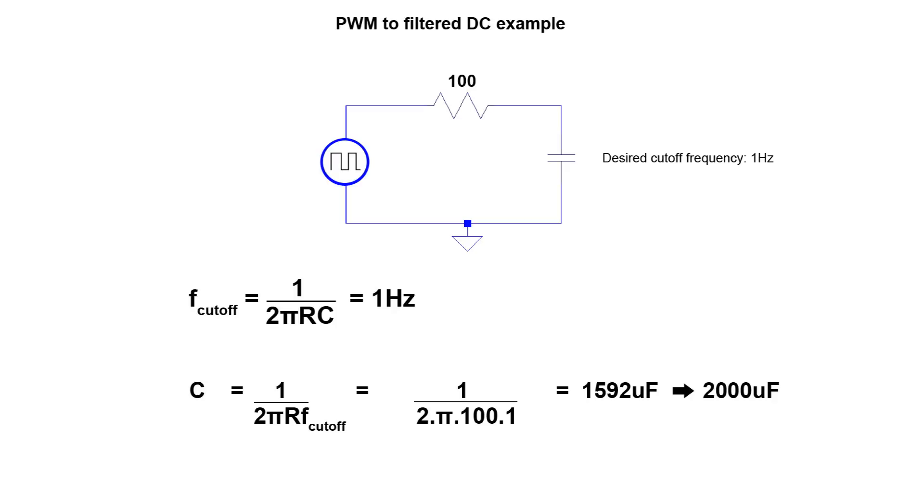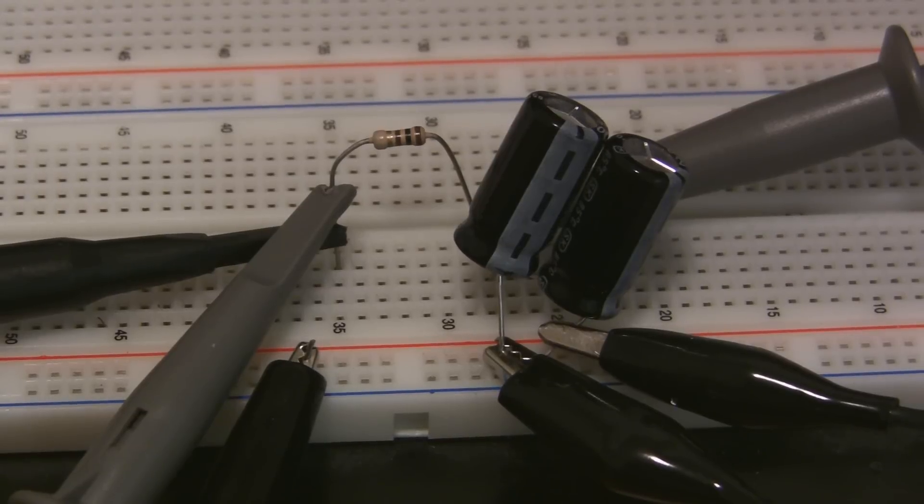So with R equals 100 ohms and reusing the same equation, we get a capacitance of 1592uF. Some extra capacitance won't hurt in this case because we want as much filtering as possible, so let's round that up to 2000uF. Now let's see how this heavy filtering affects the square wave.